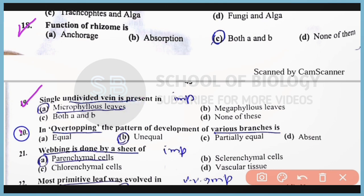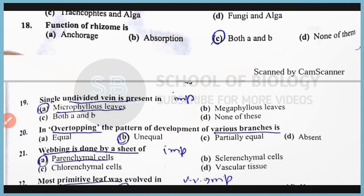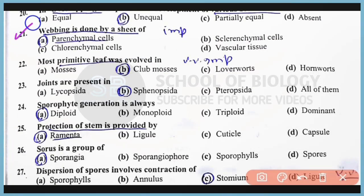Question Number 20: In overtopping, the pattern of development of various branches is unequal — in other words, two unequal branches are formed, with dichotomous branching forming an extra smaller branch, and leaves are formed. Question Number 21: Webbing in plants is the process of attachment of adjacent branches, and this is done by a sheet of parenchyma cells. The correct answer is Option A.